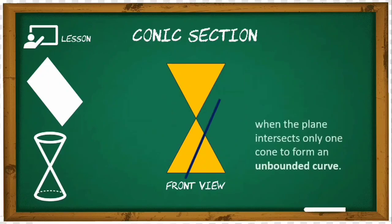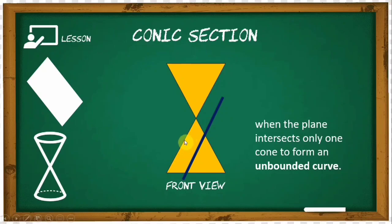The third type is formed when the plane is tilted and at the same time parallel to the edges of the cone, forming an unbounded curve. Our plane is parallel to the edges of the double cone — both the bottom edge and the top edge. This is what we call the parabola.